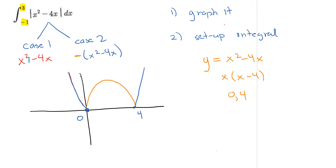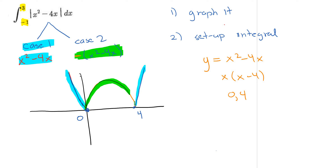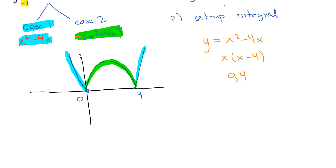Now think about your two cases on the graph. Case 1 represents the original graph — these blue ends that weren't reflected. Case 2 is the green part — the portion of the graph that got reflected across the x-axis. Remember those two cases because you'll need them when setting up your integral.